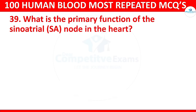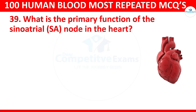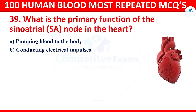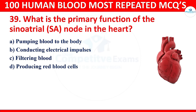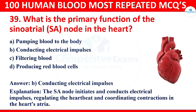Question 39: What is the primary function of the sinoatrial (SA) node in the heart? Options: pumping blood to the body, conducting electrical impulses, filtering blood, or producing red blood cells. The correct answer is conducting electrical impulses. The SA node initiates and conducts electrical impulses, regulating the heartbeat and coordinating contraction in the heart's atria.